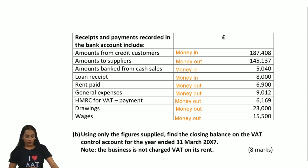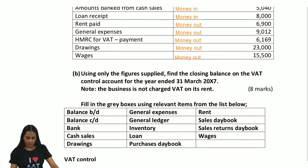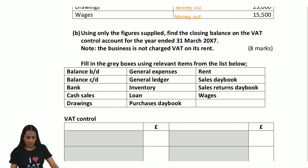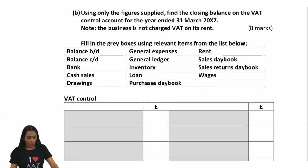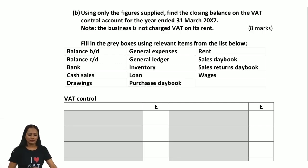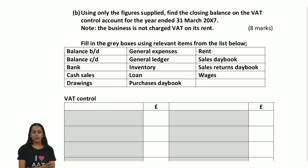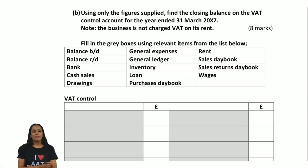Part B of the question asks: using only the figures supplied, find the closing balance on the VAT control account for the year ended 31st of March 2017. The closing balance will either show amounts payable to the authorities or amounts we can claim as a refund. I need to use the information and build up this VAT control account.